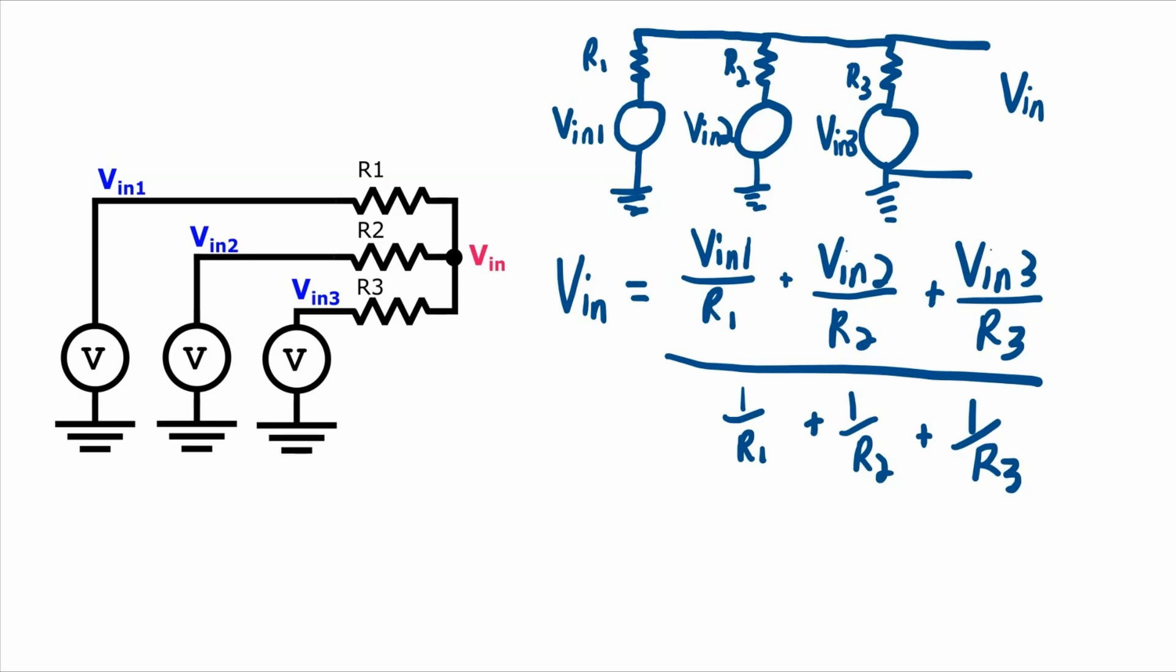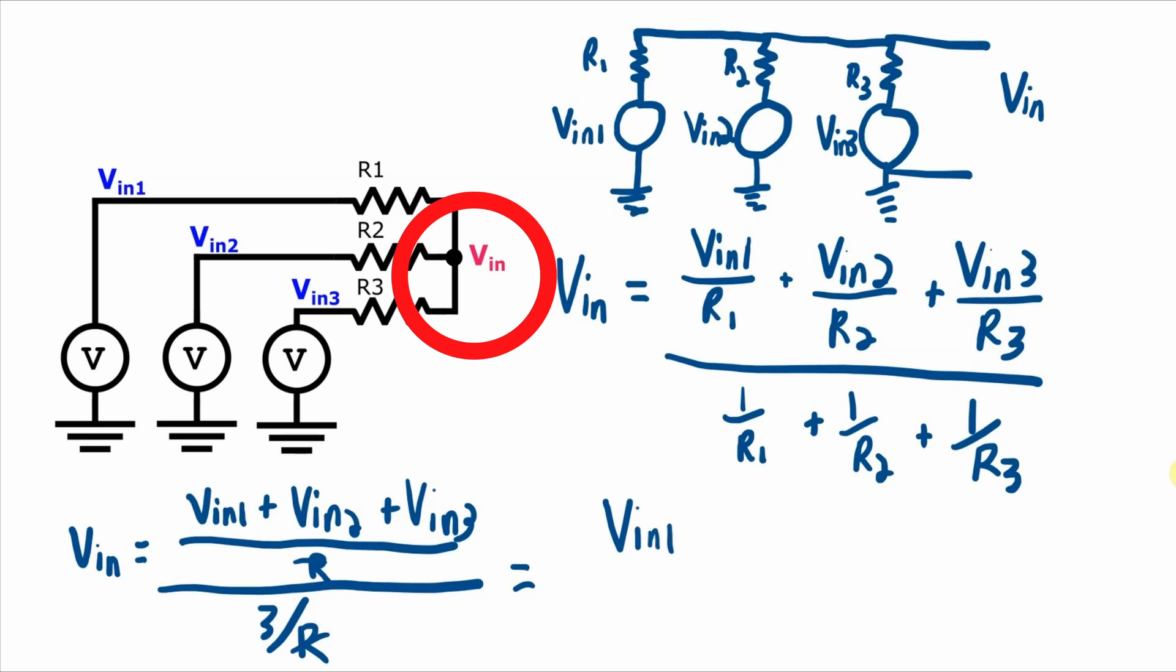But the circuit becomes more useful, the summing amplifier circuit becomes more useful, and the analysis becomes easier if all of those resistors are equal to each other. So if they are all equal to each other, the numerator becomes, and the denominator will be 3 over R. Now these two R terms are going to cancel, and you get an input. This Vin is equal to the Vin1 plus Vin2 plus Vin3 over 3. So now you can see the first clue of why this summing amplifier circuit is a summing amplifier circuit.